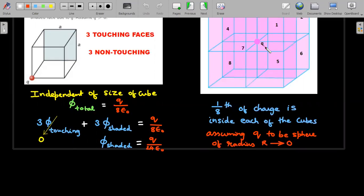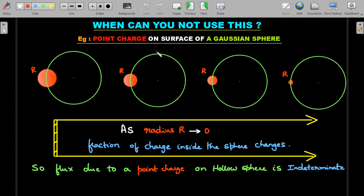When can you not use this? I'm taking an example of a point charge on the surface of a Gaussian sphere. This green colored surface is a Gaussian sphere with a point charge on the periphery. The actual problem is on the right side. Imagine someone asked you the flux associated with this Gaussian surface - the answer cannot be determinate.